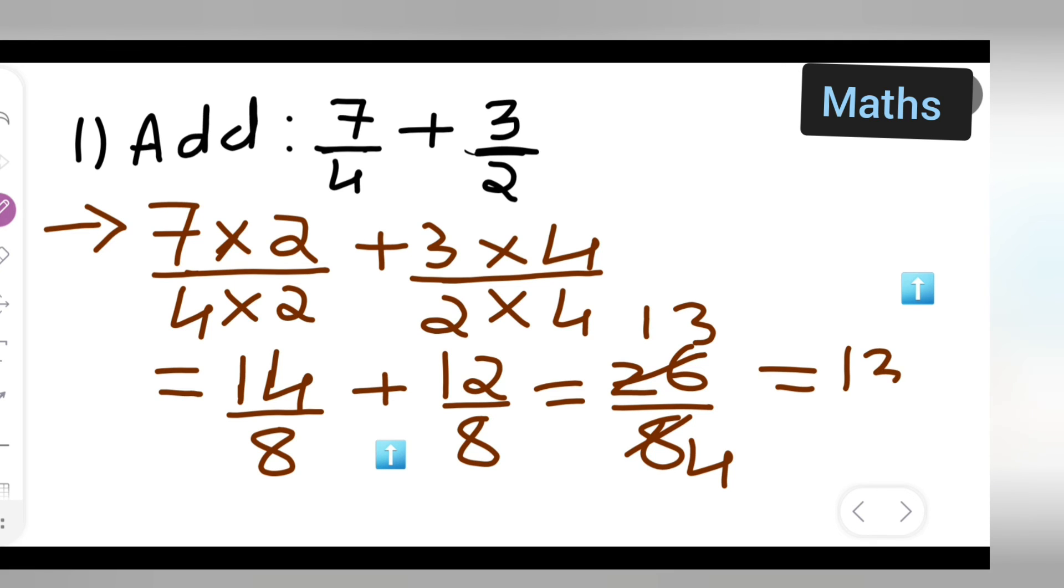2 fours are 8, 2 ones are 2, 3s... so your answer is 13 upon 4. So I hope you have understood how to add, especially when you have two different denominators.